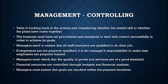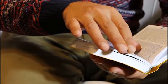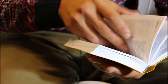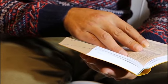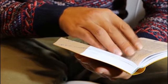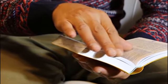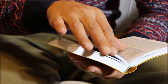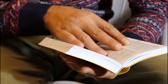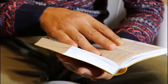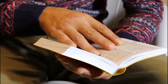Some of the responsibility that falls on management when it comes to control is that managers should ensure that all their staff members are qualified to do their job. If your employees or staff are not properly qualified, then you as the manager have the responsibility to make sure that you give your employees proper training.